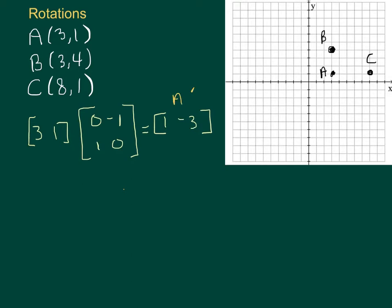And now let's look at B, at coordinates 3, 4. So we'll call this A and then we get A prime. This is B. And when we multiply it by this special matrix here we get 3 times 0 plus 4 times 1 is 4, and 3 times negative 1 plus 4 times 0 is negative 3.